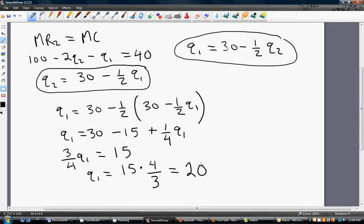So firm 1 should produce 20 units of output in order to maximize profits in this Cournot competition. For firm 2, to get firm 2's output, we can just simply take this 20 here and plug it into firm 2's reaction function. So doing that, let me go over here then.